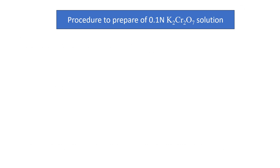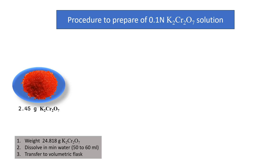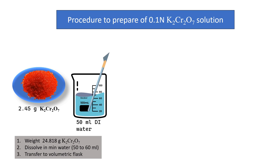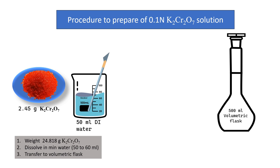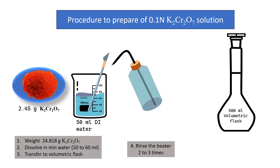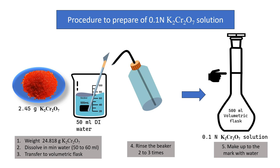Let's see schematically how to prepare 0.1 normal dichromate solution. First, weigh 2.45 grams of K₂Cr₂O₇ and transfer to a beaker. Dissolve in a minimum amount of water (50–60 ml), making sure every particle dissolves. Transfer the solution to a 500 ml volumetric flask, rinse the beaker 2–3 times with small amounts of water and add those washings to the flask. Finally, make up to the mark with water.